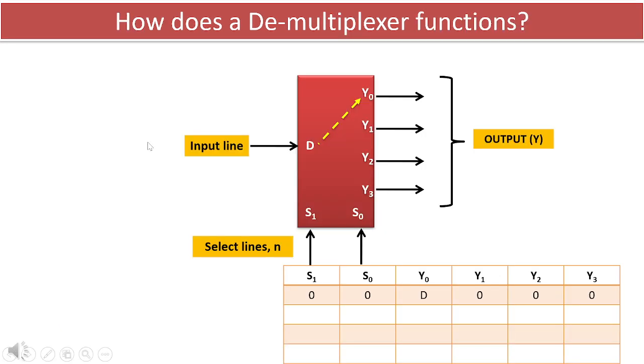In the scenario where the select lines are both set to low logic, that is when s1 equals s0 equals 0, the data D at the input is directed to the output y0, as depicted in the diagram and recorded in the truth table.